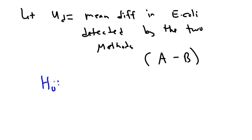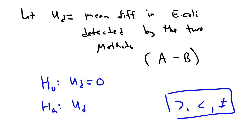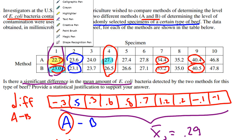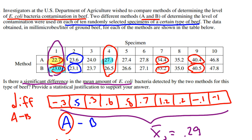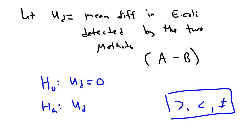H0, our null hypothesis, always indicates there's really no difference between the two things. In our case we're going to say mu sub D is 0, that there is no difference in the amount of E. coli either method detects. And HA is going to be something else about mu sub D, either greater than, less than, or not equal to. If we read the question, it says is there a significant difference in the mean amount of E. coli? This problem is not specifying does method A detect more or does method B detect more, just is there a significant difference. So that means mu sub D is not equal to 0.